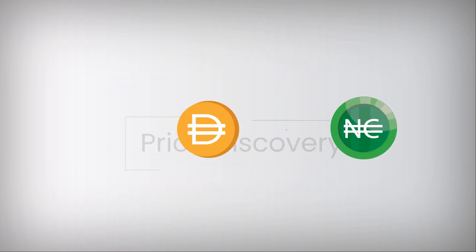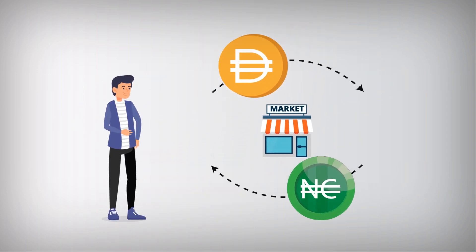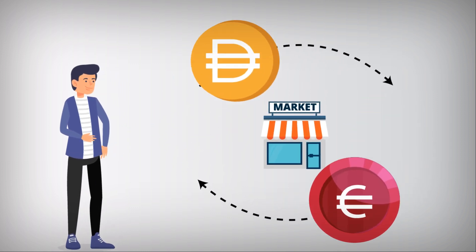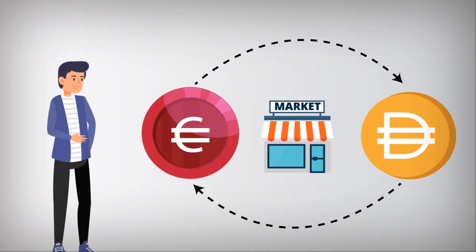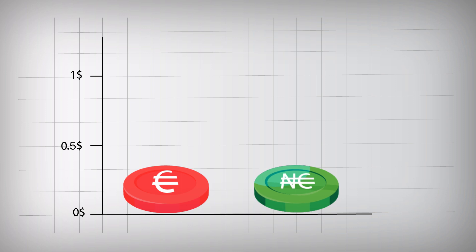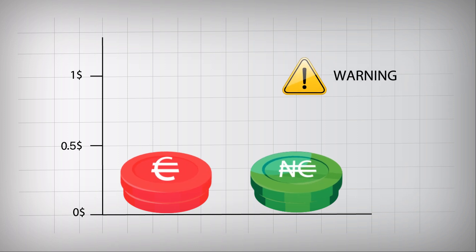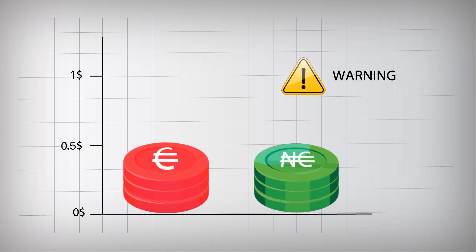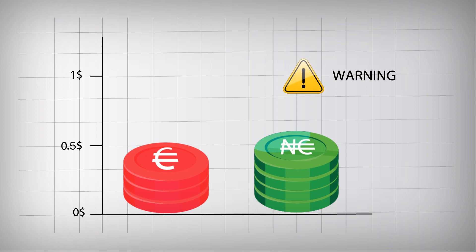Cover Protocol incentivizes liquidity providers of both claim and no-claim tokens. The market price of each token reflects the risks associated with the respective coverage. The higher the chance of a hack or exploit against the covered protocol, the higher the market price of the corresponding claim token.